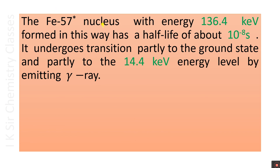The excited Fe-57 nucleus with energy 136.4 kilo electron volts has a half-life of about 10⁻⁸ seconds. It undergoes transition in two ways: partly directly to the ground state, and partly to the 14.4 kilo electron volt energy level by emitting a gamma ray. The energy difference between the two excited levels is 122 kilo electron volts, which equals 136.4 minus 14.4 kilo electron volts, emitted as gamma radiation.